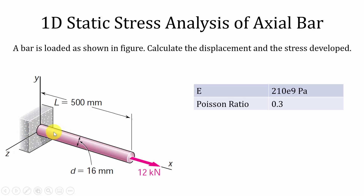So here this is an axial bar of uniform cross section. It is a circular bar of diameter 16 mm. The length of the bar is 500 mm. It is fixed at one end and it is subjected to an axial force of 12 kN at the other end.